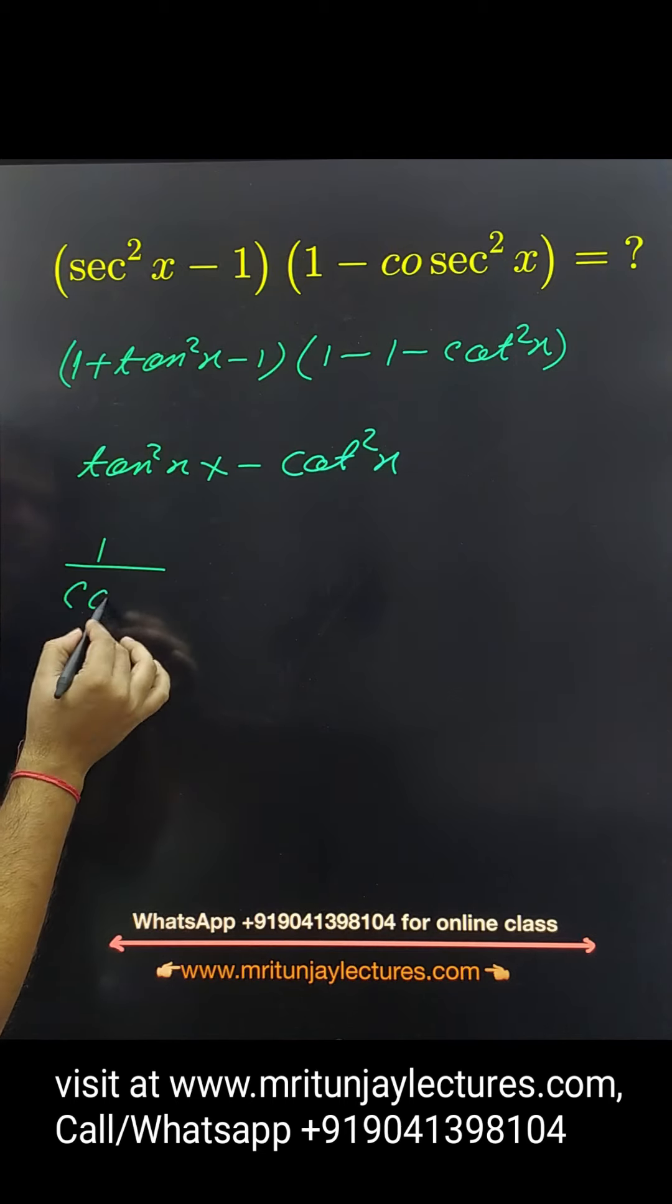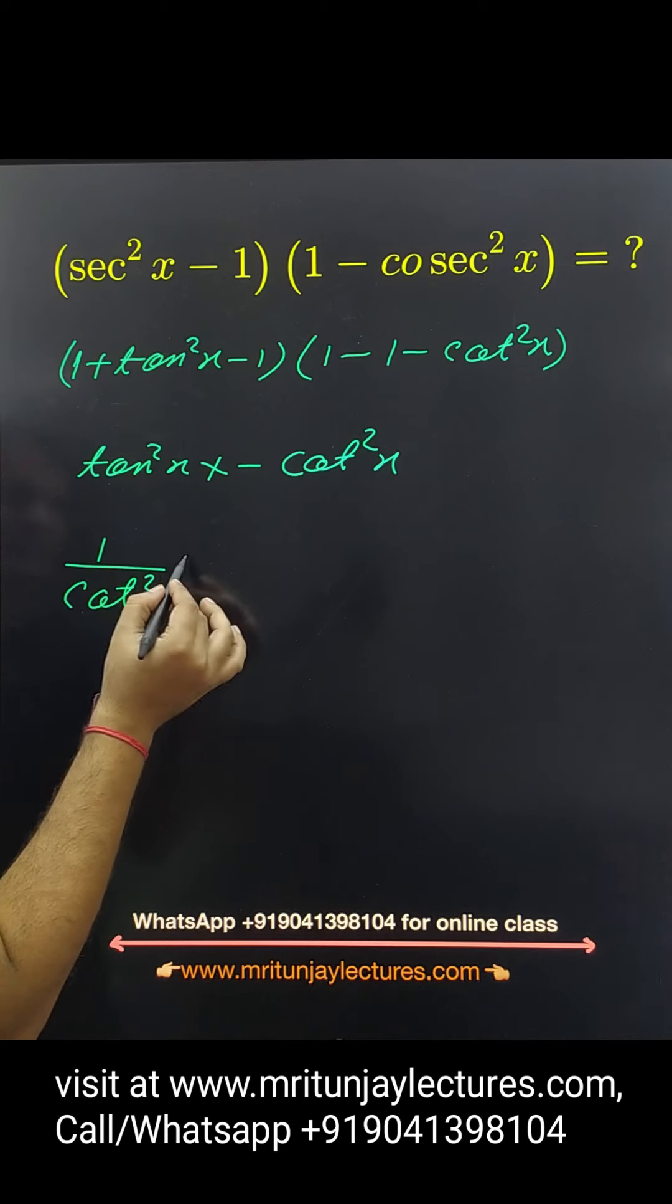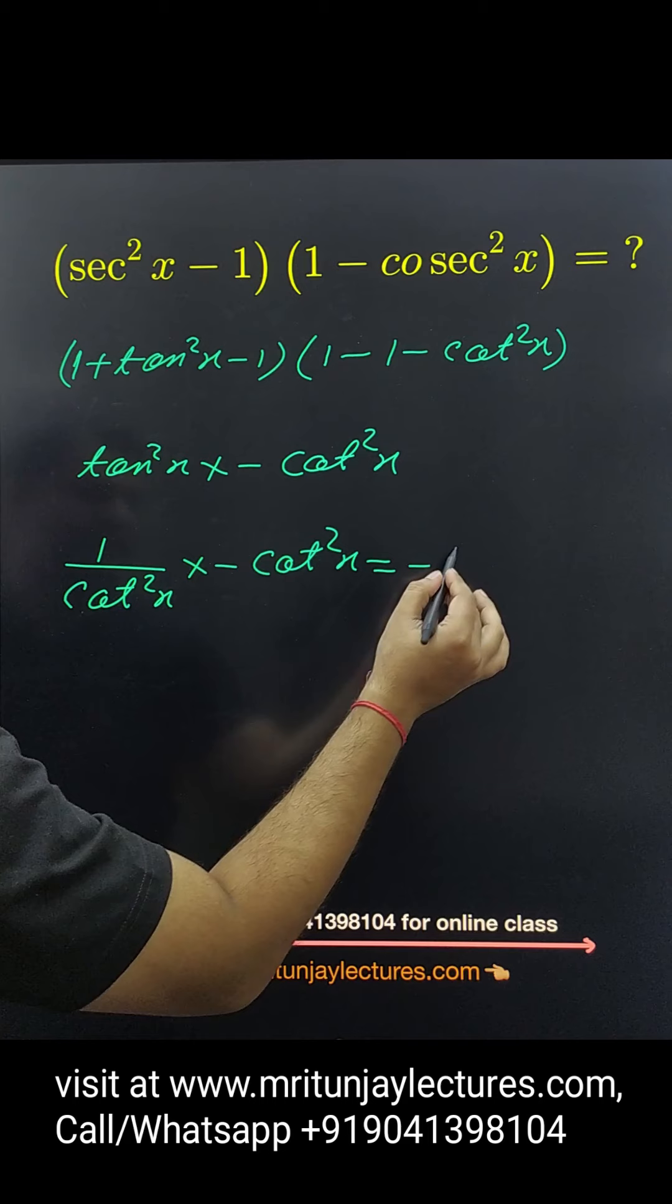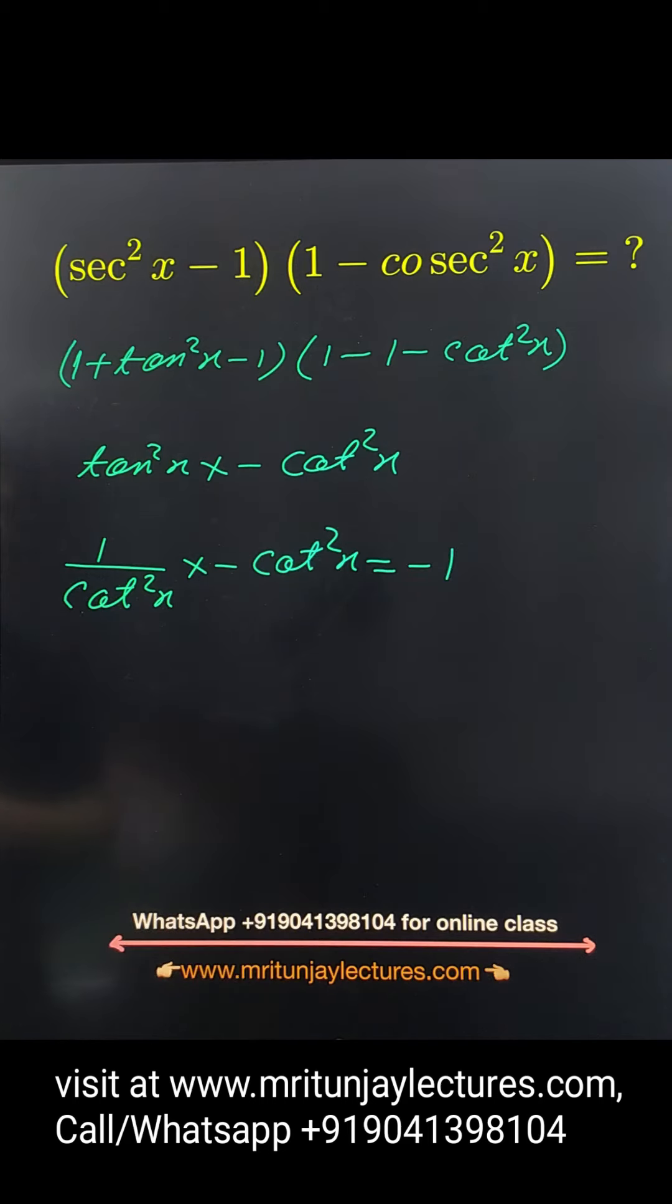This one written then 1 upon cot square x, then 1 upon cot square x and here minus cot square x, so that is minus 1 is the right answer, make it.